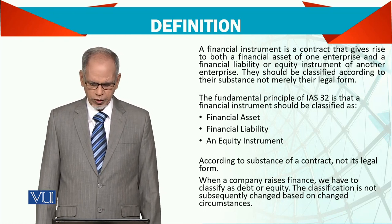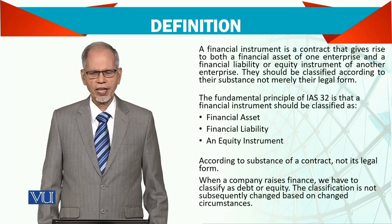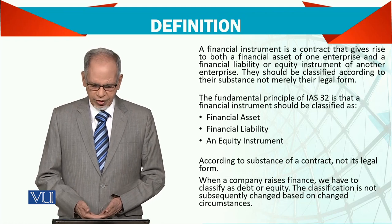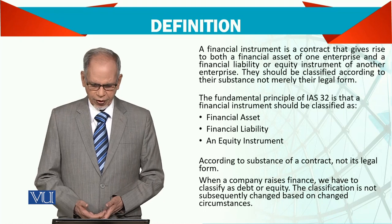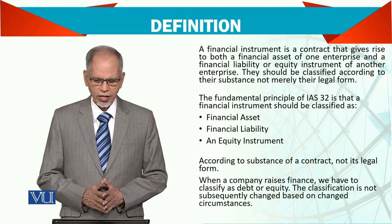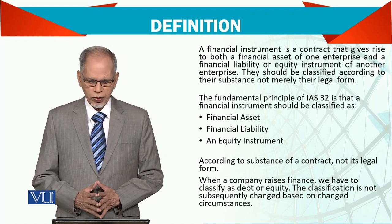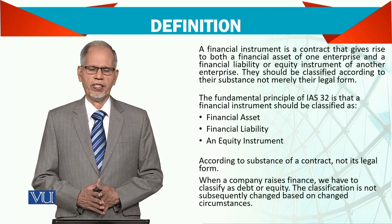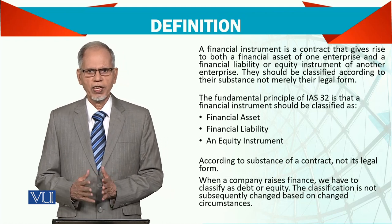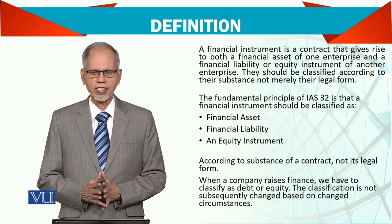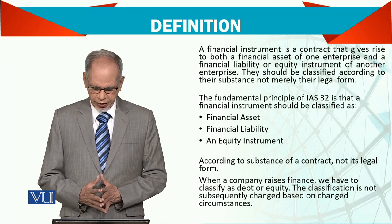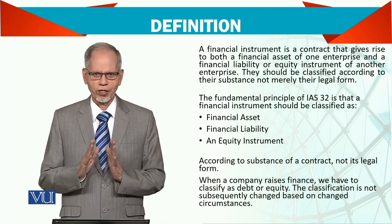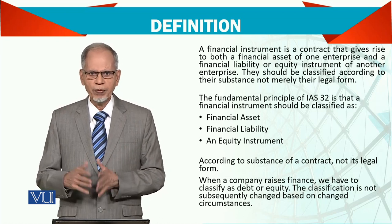Financial instruments should be classified according to their substance and not merely their legal form. Substance means what it actually is, not really the legal side of it. The fundamental principle of IAS 32 is that financial instruments should be classified as financial assets, financial liabilities, and equity instruments according to the substance of the contract, not the legal form. When a company raises finance, we have to classify it as debt or equity. For example, if a company issues shares they are creating equity, and if they issue debentures or bonds, they create debt. The classification cannot subsequently change based on changed circumstances — once you classify a certain asset, liability, or equity, you cannot change it. It should remain as it is until that asset is eliminated from the balance sheet.